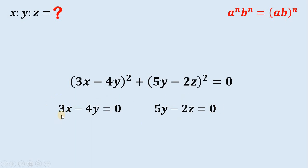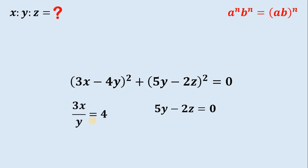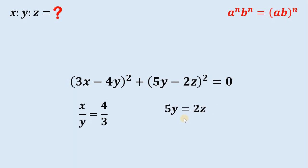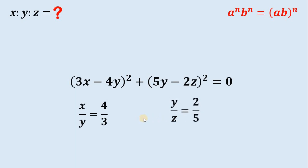For the first equation, 3x minus 4y equals 0: add 4y to both sides, then divide both sides by y and by 3. This gives us the ratio x to y equals 4 to 3. For the second equation, 5y minus 2z equals 0: add 2z to both sides, then divide both sides by z and by 5. This gives us the ratio y to z equals 2 to 5.